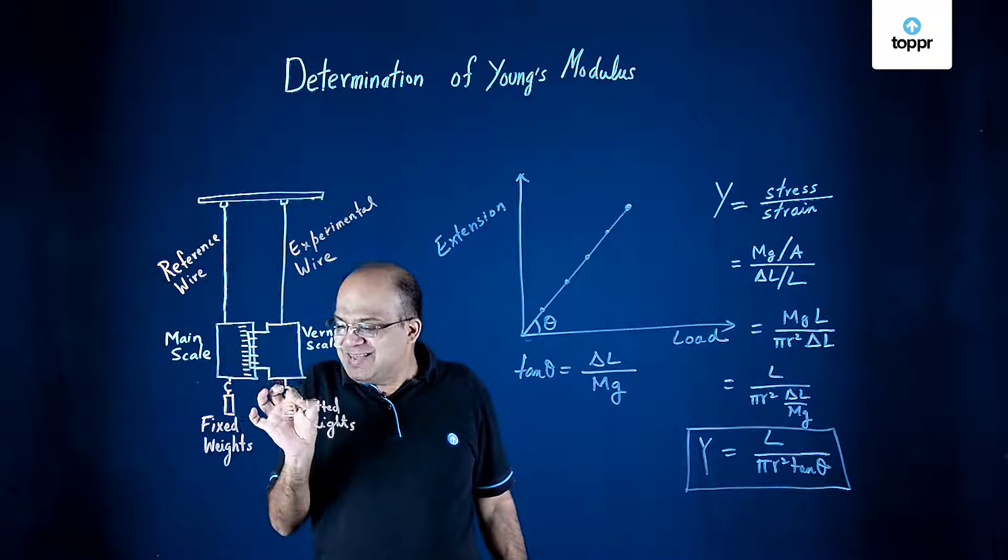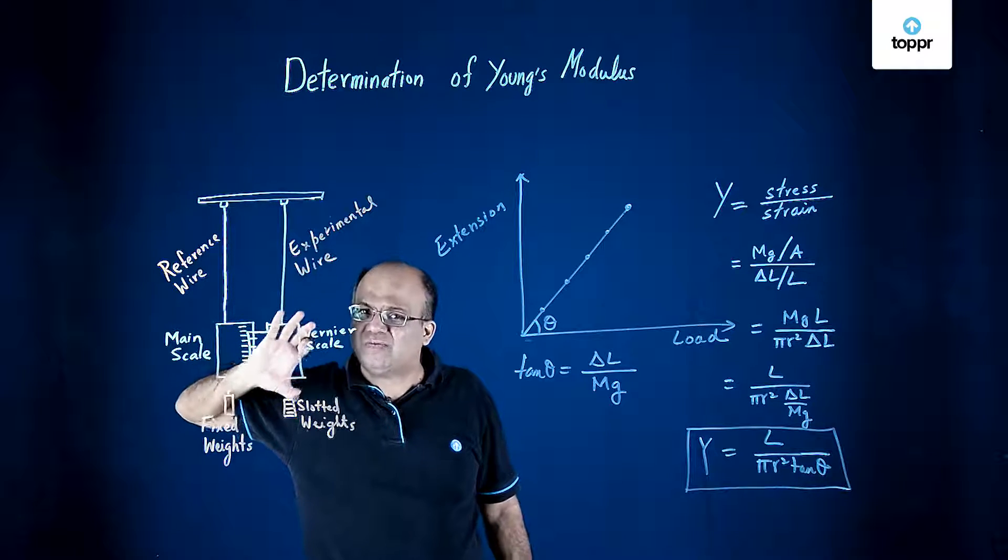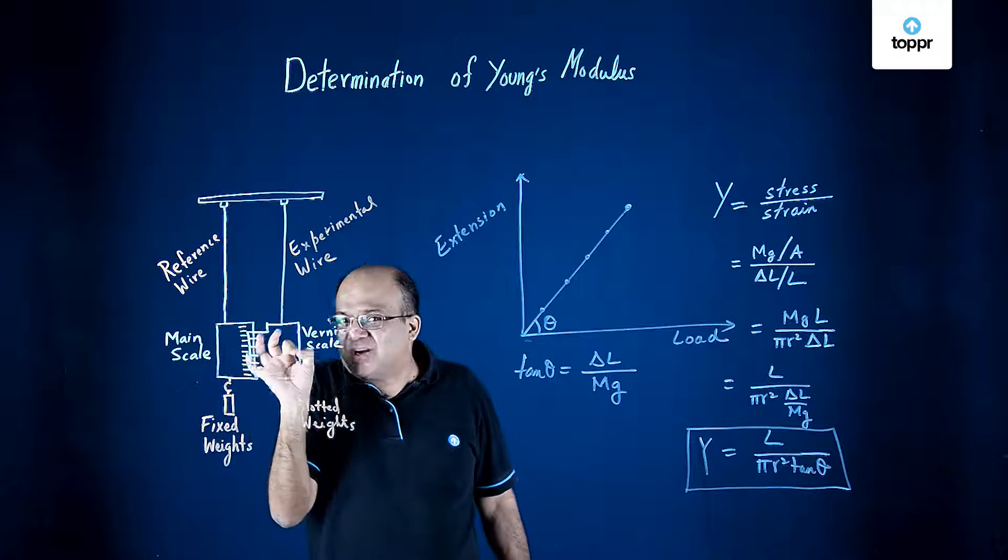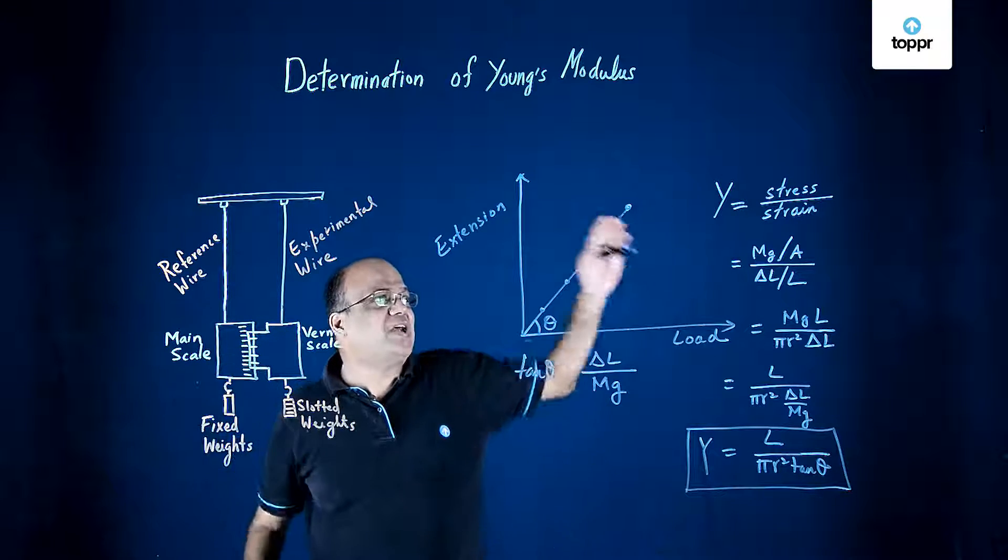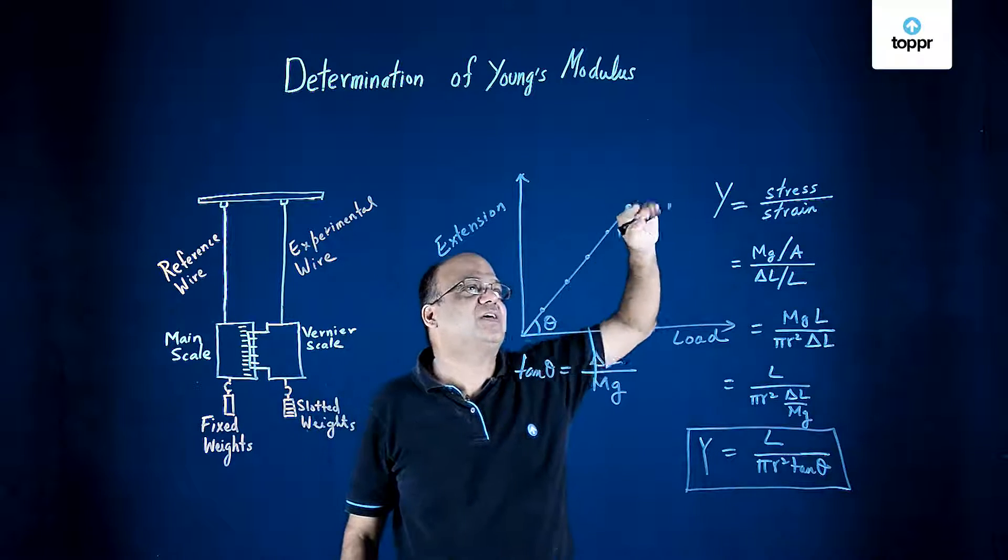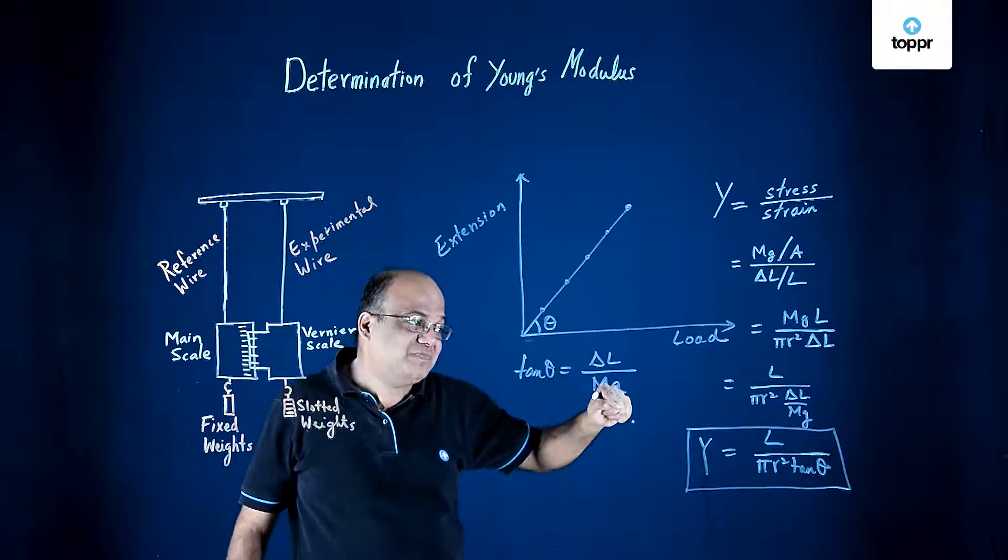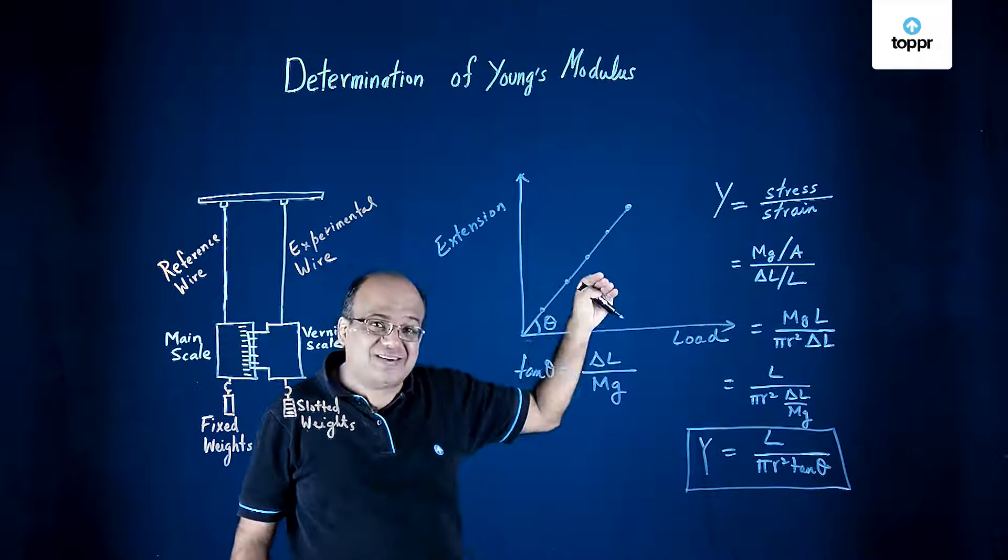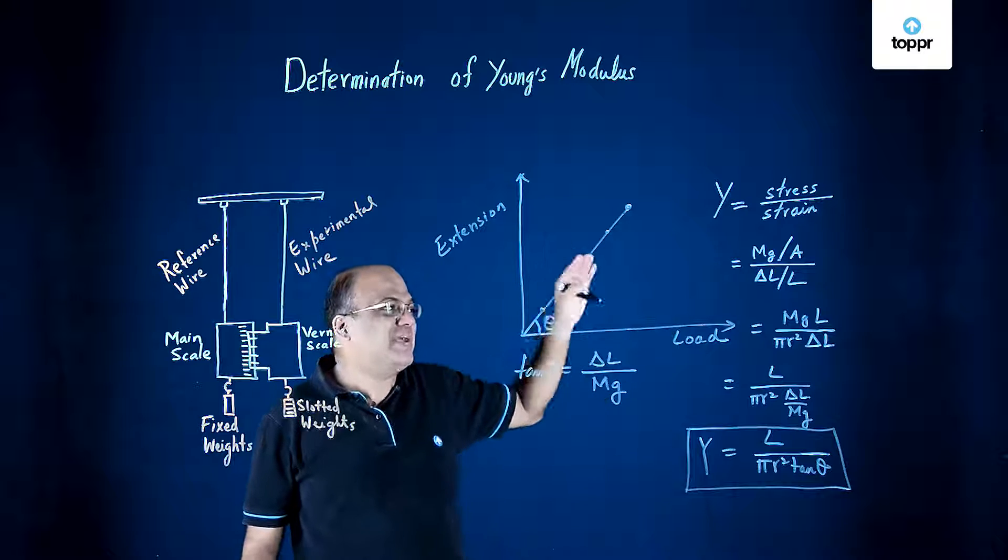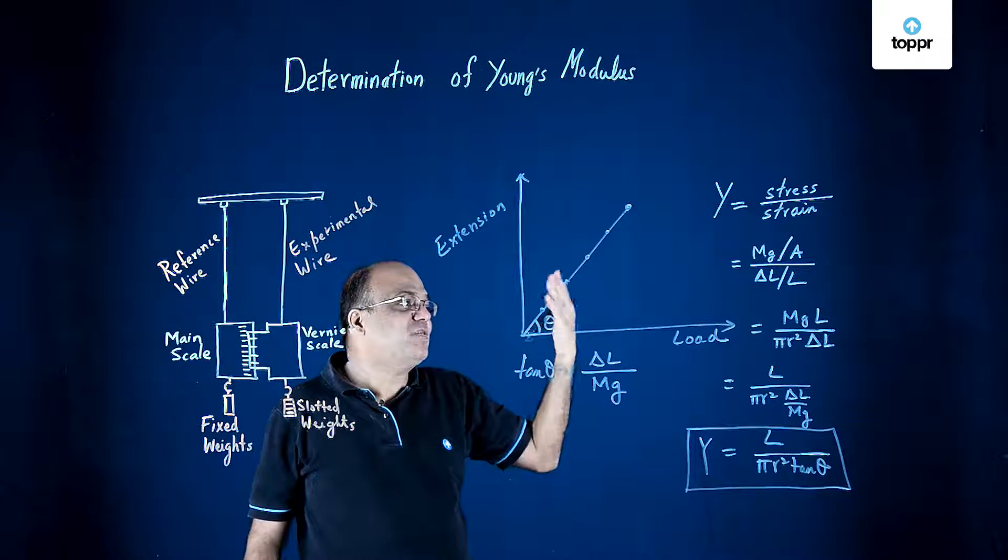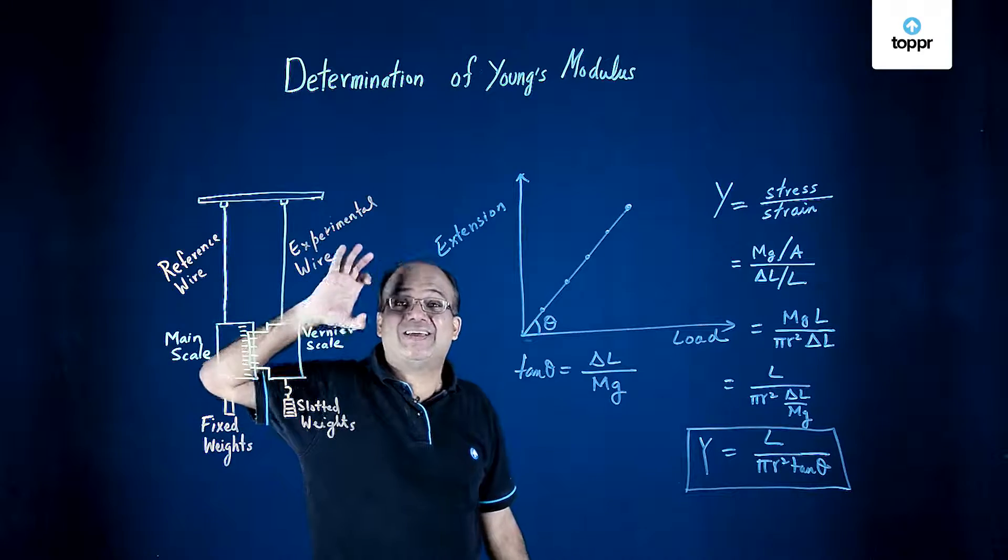And then we increased the weight on the hanger of the experimental wire in steps of half kg. Every time after putting the weight we waited for half a minute or a minute and then noted down the readings. So this way we got the reading for extensions. After that we made a graph of extension versus load. We got a straight line. We measured this theta. From there we got tan theta. Tan theta becomes delta L by mg. Now Young's modulus is stress by strain. Stress is force upon area, so mg by A. Strain is change in length by original length, delta L by L. So from here we get Young's modulus equal to L divided by pi r square tan theta. So this is how we calculate Young's modulus in the lab.